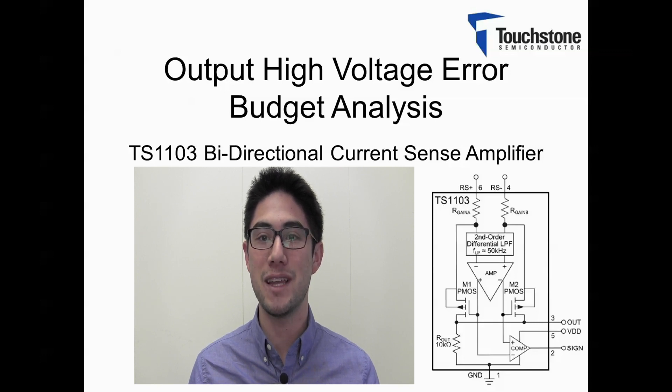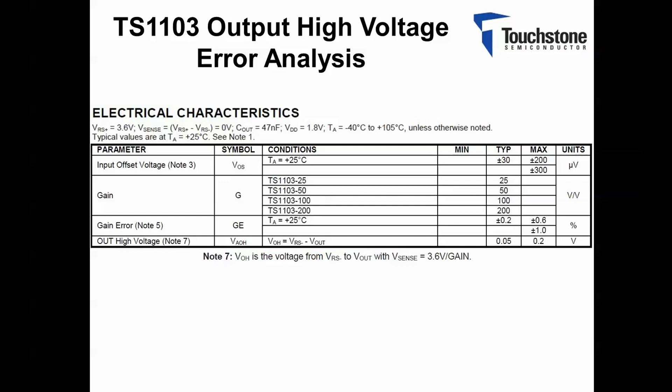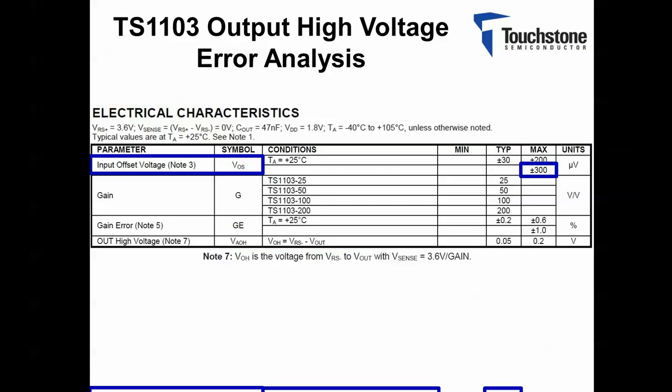Before I begin this demonstration, I would like to start by taking you to the datasheet. Here is a portion of the EC table which can be found on page 3 of the datasheet. For this demonstration, I will be taking into account the max values for the given parameters. First, the input offset voltage, which over the entire temperature range will max out at 300 microvolts.